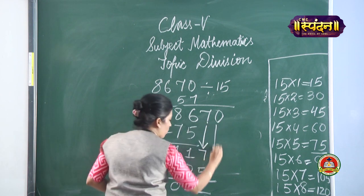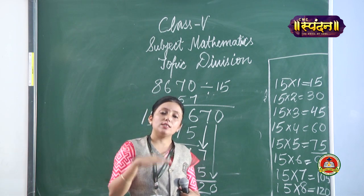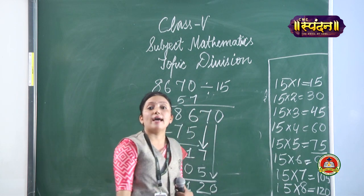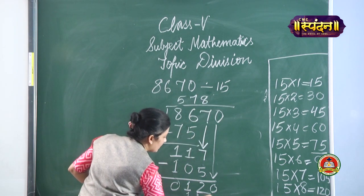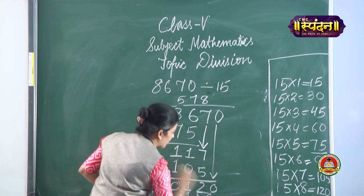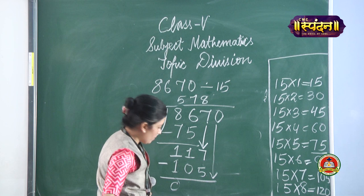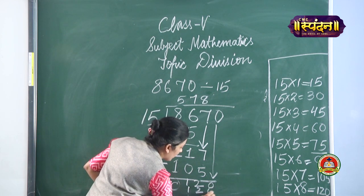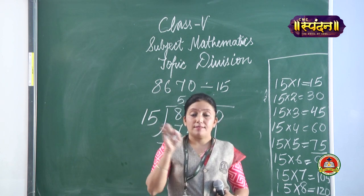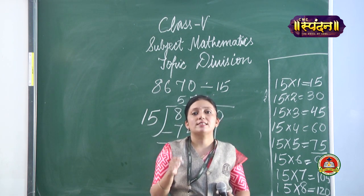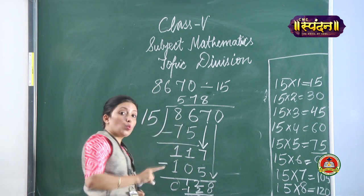With 120: 15 eights are 120. Write 8 in the quotient. Subtract 120 minus 120, which gives 0. Nothing is left over, so the remainder is 0. We have now learned how to divide a 4-digit number by a 2-digit number.